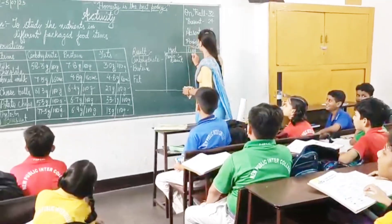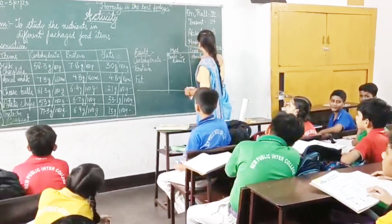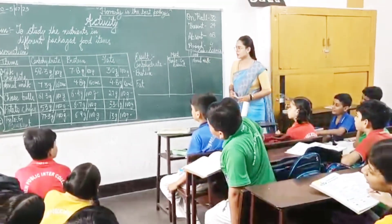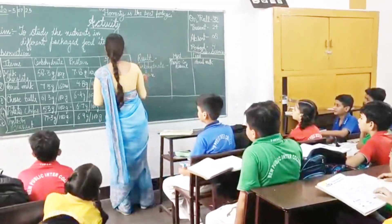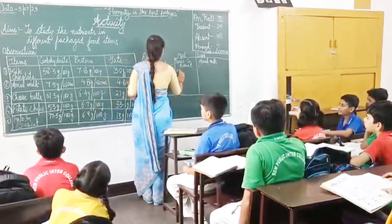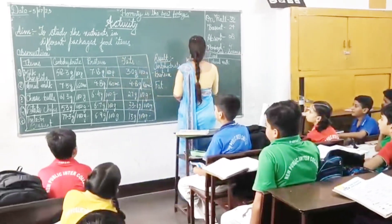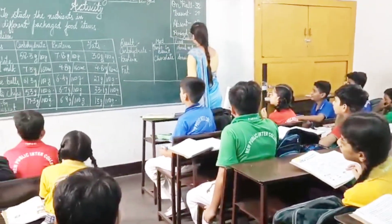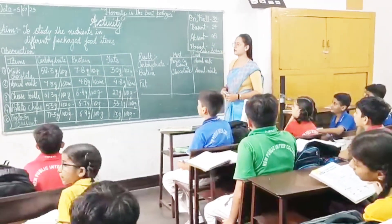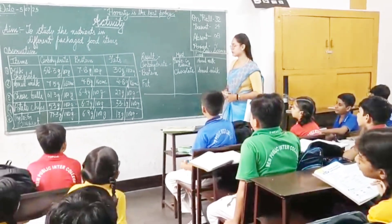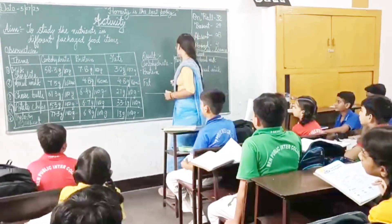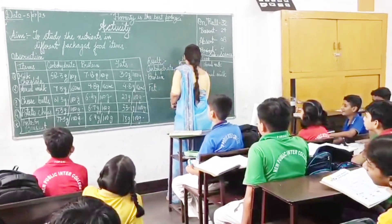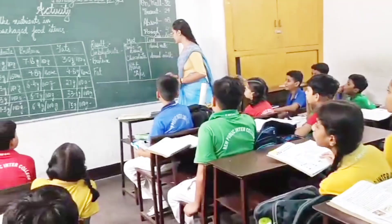The least carbohydrate is in Amul milk. For protein, the most is in Hershey's chocolate, and the least is in Amul milk. Then we have fat — the most fat is in potato chips, and the least is in Amul milk.